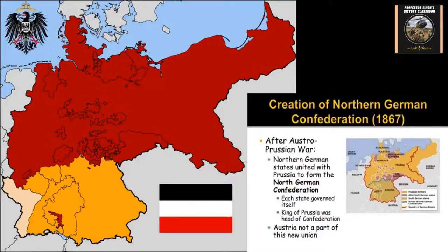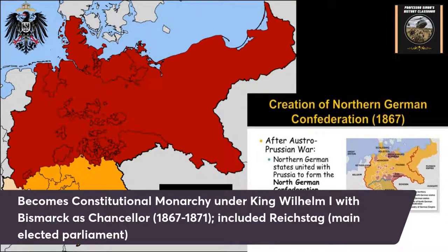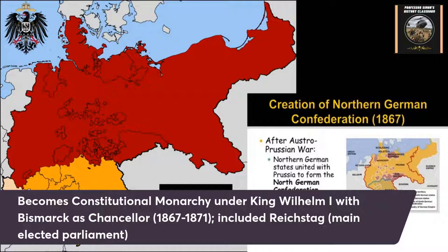The North German Confederation was a constitutional monarchy. King Wilhelm became its ruler as monarch, and Bismarck became the chancellor. They had an elected parliament called the Reichstag, which was a direct representation parliament, and also the Bundesrat — a council-type assembly of appointed members. The Reichstag was the main parliament where representatives could be elected, and it continued under the Weimar Republic in the early 20th century as well.